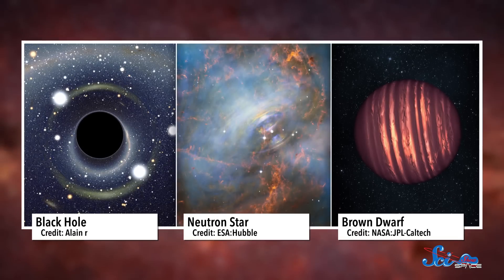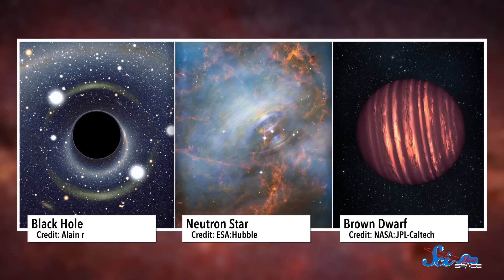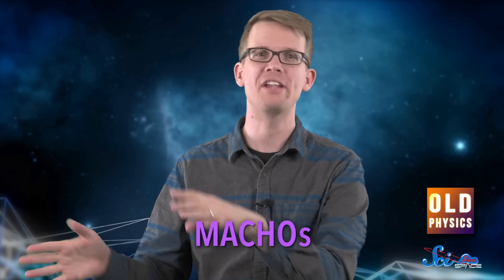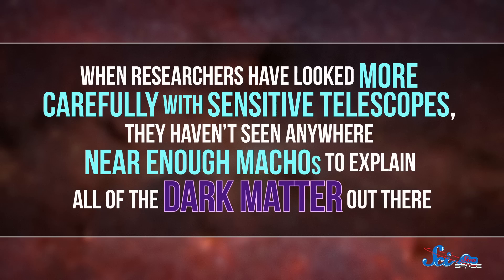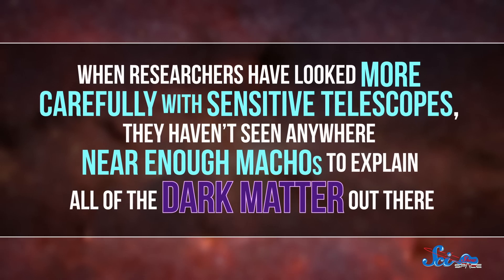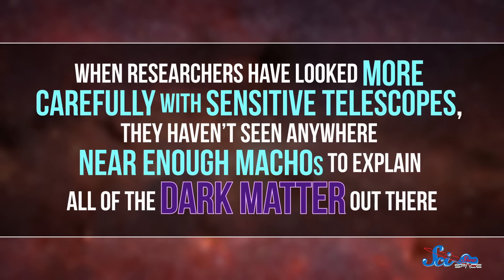The old physics crew wants to explain dark matter with stuff we already know exists. Some of them think that dark matter is literally that. Regular matter that's dark, like black holes, or neutron stars, or failed stars known as brown dwarfs. All of these are called MACHOs, with an M, not the delicious snack. It stands for Massive Compact Halo Objects. MACHOs produce little, if any, light of their own, so it would make sense if all we could see was their gravity. Thing is, when researchers have looked more carefully with sensitive telescopes, they haven't seen anywhere near enough MACHOs to explain all the dark matter out there.